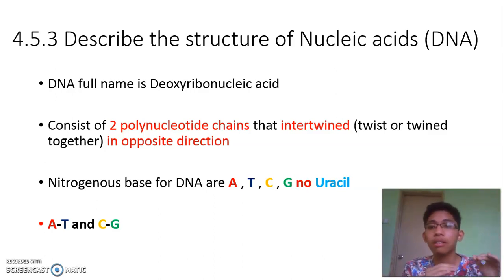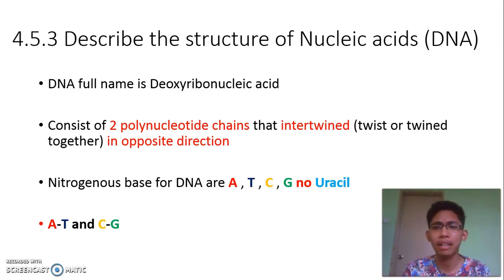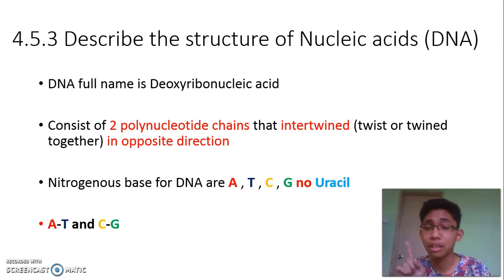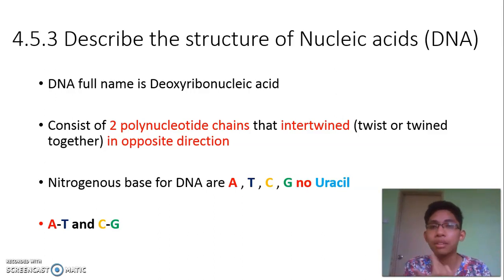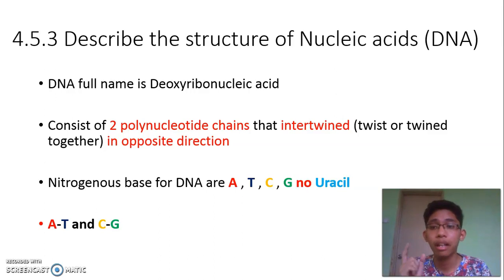Cytosine cannot suddenly pair with thymine — that is wrong. It must always be A-T and C-G. Remember to recite it as A, T, C, G, because that's how the pairing goes.